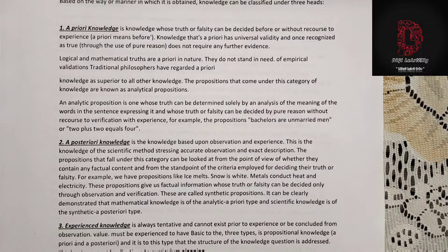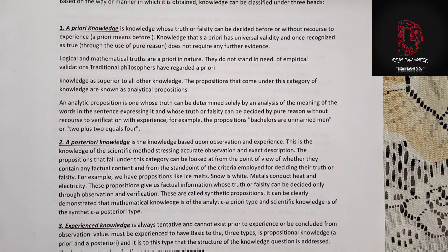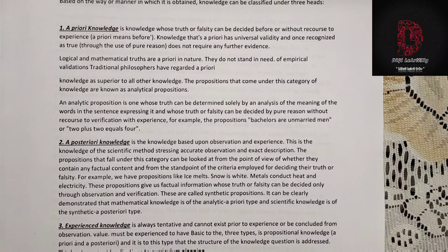A priori knowledge has universal validity and, once recognized as true through the use of pure reason, does not require any further evidence. Logical and mathematical truths are a priori in nature — they do not need empirical validation. Traditional philosophers have regarded a priori knowledge as superior to all other knowledge. The propositions that come under this category are known as analytical propositions. An analytic proposition is one whose truth can be determined solely by an analysis of the meaning of the words in the sentence, and whose truth or falsity can be decided by pure reason without recourse to verification with experience.